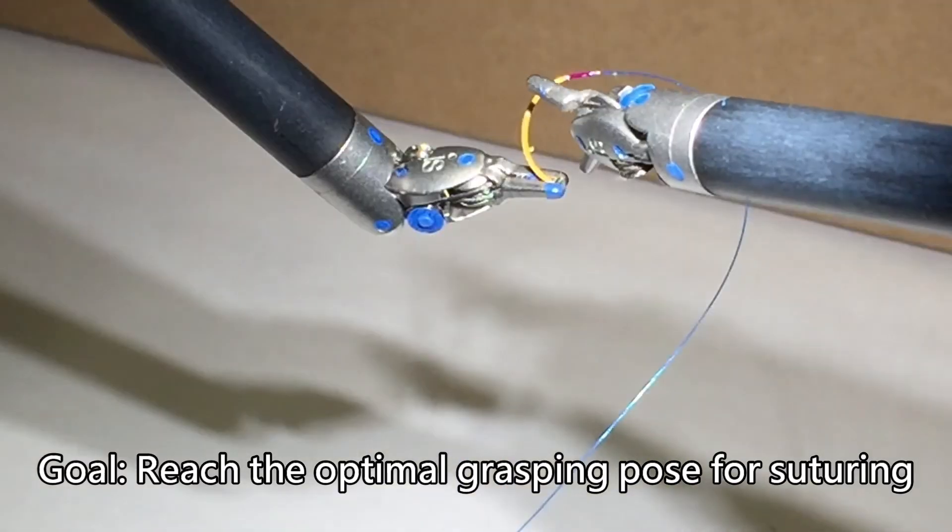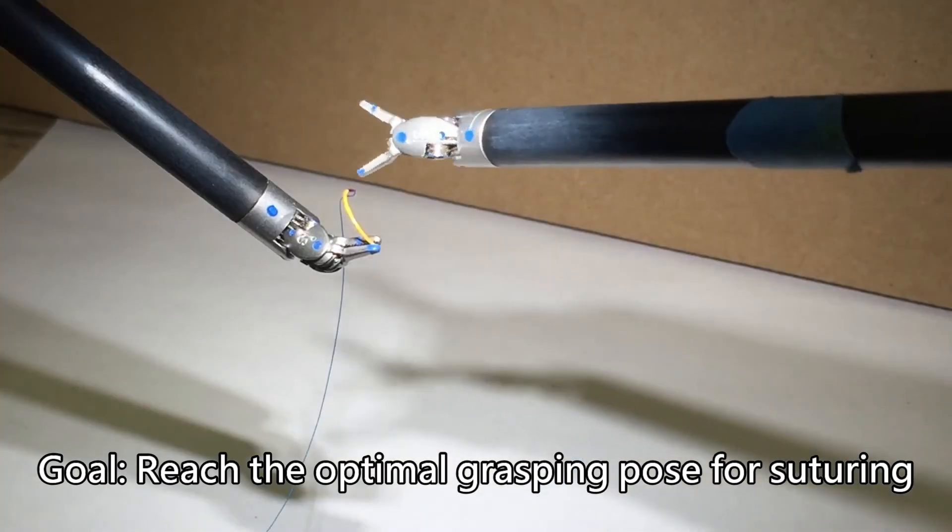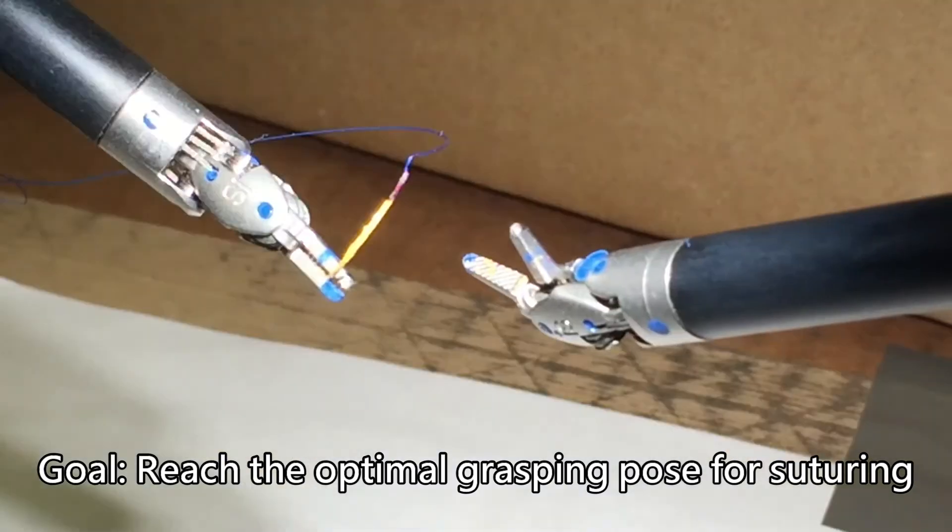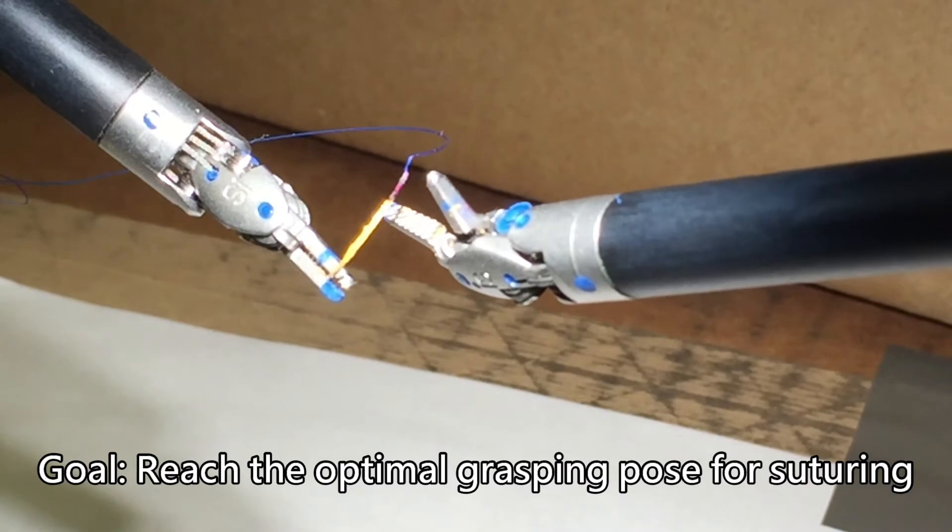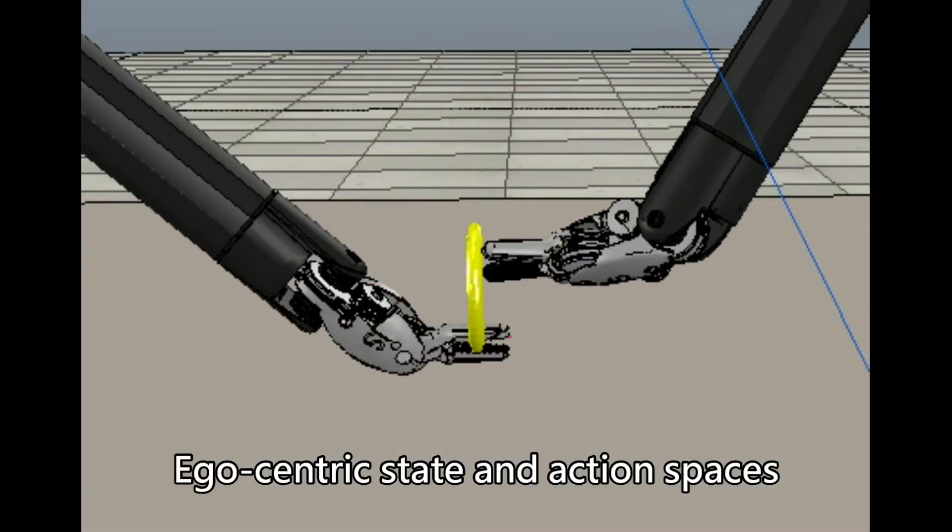Previous study has shown that regrasping takes on average 7.4 seconds to complete, which is time-consuming. Therefore, in this work, reinforcement learning is applied to this bimanual regrasping task for rapid motion planning.